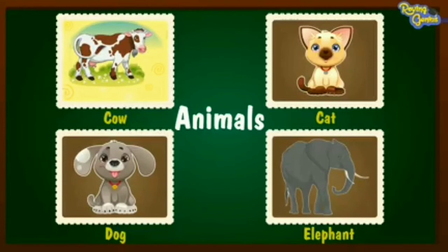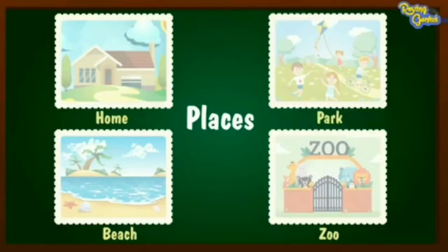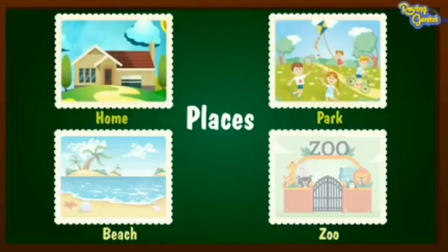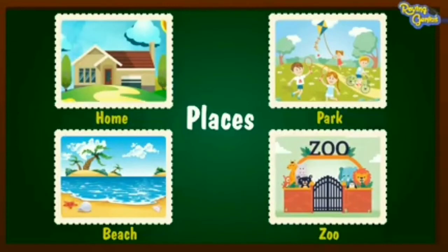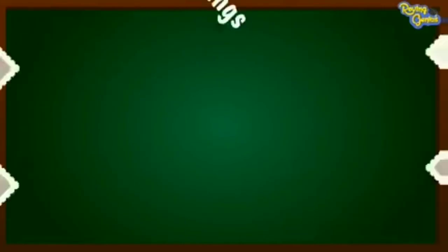Next, we will learn some names of places. All these are some examples of places: home, park, beach, zoo. And some other examples are playground, school, hospital, church, etc.